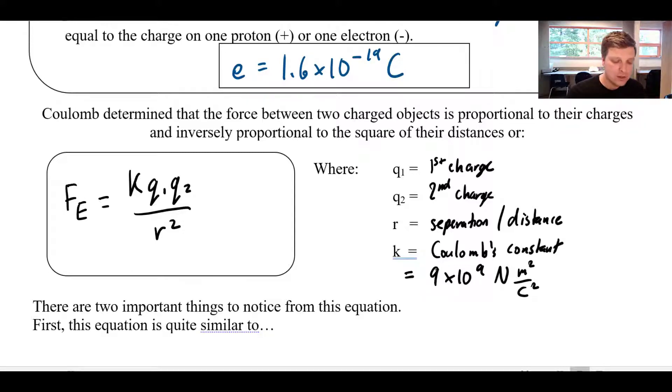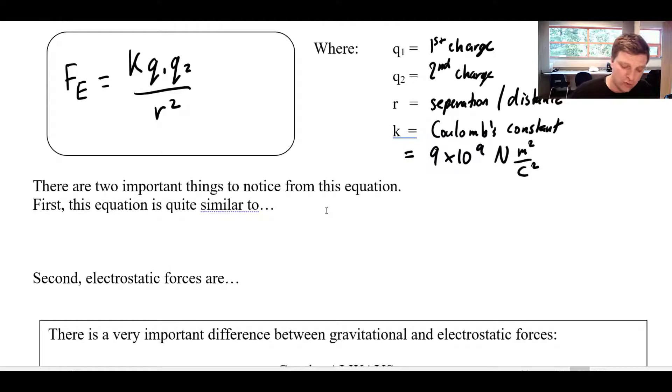Now hopefully, when you see this formula, you'll notice a few similarities right off the bat. This should remind you of gravitation. You remember gravitation, Fg equals G m1 m2 over r squared. The amount of gravitational force was dependent on some constant times the mass of the first object and the mass of the second object, divided by the square of their separation. Coulomb's law works really similarly to that.